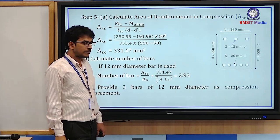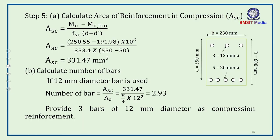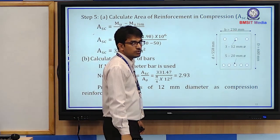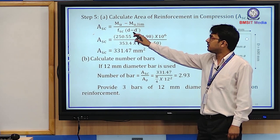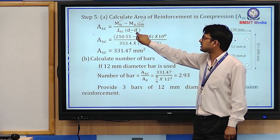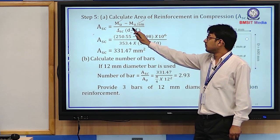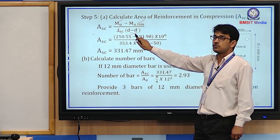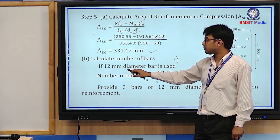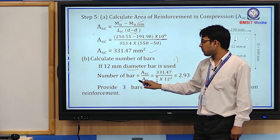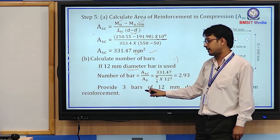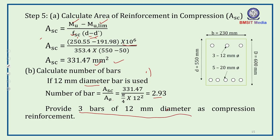Step 5: Calculate Asc (area of compression reinforcement). Using the formula Asc = (Mu − Mu,lim) / [fsc × (d − d')]: Mu = 250.55 kN·m (Step 1), Mu,lim = 191.98 kN·m (Step 2), fsc = 353.4 N/mm² (Step 3), d = 550 mm, d' = 50 mm. Converting units appropriately (multiplying by 10⁶ where needed), we calculate Asc. Choosing 12 mm diameter bars: Asc / (π/4 × 12²) = 2.93 ≈ 3 bars.